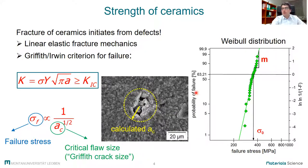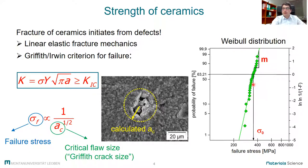To describe the strength distribution, we generally can extract two different parameters. The first one is the so-called Weibull modulus, which is a measure of scatter. A low scattering means a high Weibull modulus. And the second parameter is the characteristic strength, which is the strength at which approximately 63 percent of specimens fail.